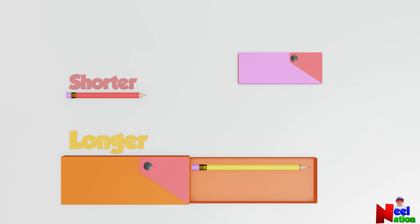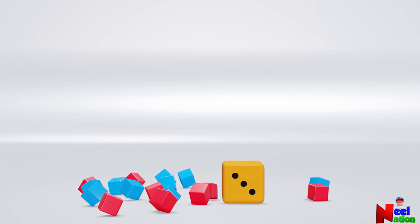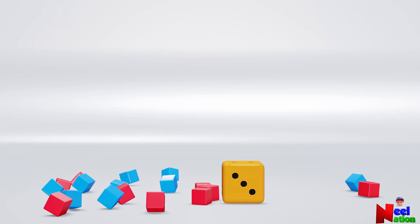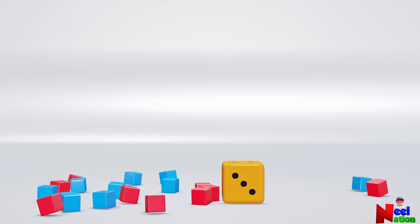Now let's play a fun dice game and make a long and short row of cubes. Here you have some cubes and one dice. You have some cubes that are red and some blue. Let's roll the dice two times for each color.